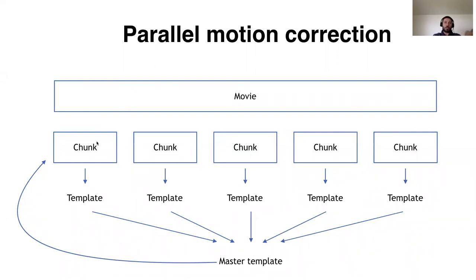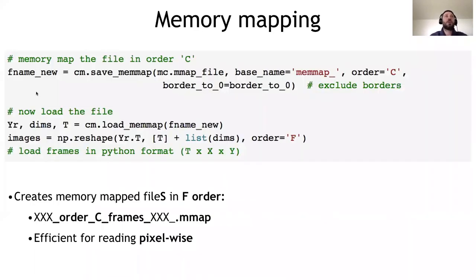So a denoised version of your field of view. You will merge everything in a master template, and then you can start again the operation iteratively as many times as you want. Generally just once is fine. So these are multiple advantages. First, we save time because we are parallelizing. And second, we also save in space because we don't have to load the full movie in memory, but maybe we just need 100 or 200 frames for each of these chunks. Once we've done motion correction, we obtain a file that as I told you was in F order.